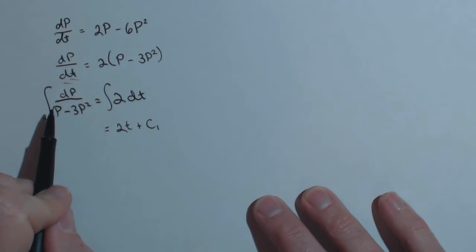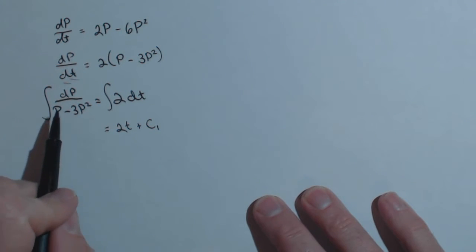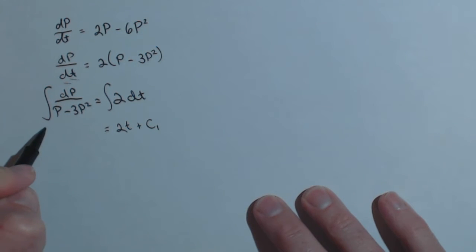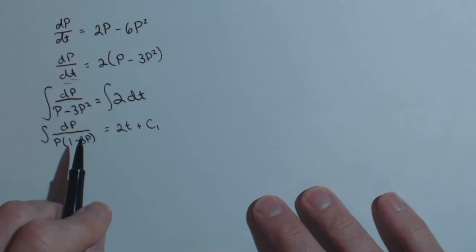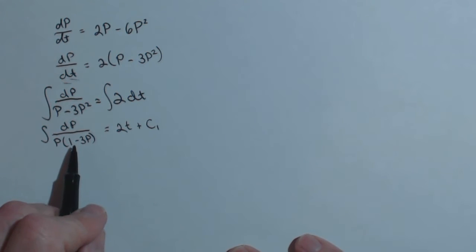Over here we are going to have to come up with a technique for doing this. It's not quite a super straightforward one. What I would notice is that the denominator does factor into p times 1 minus 3p.